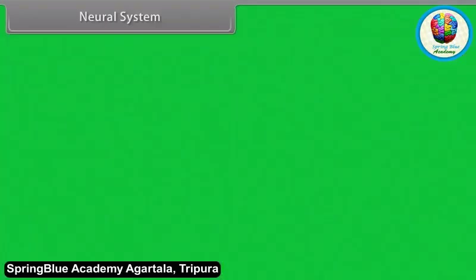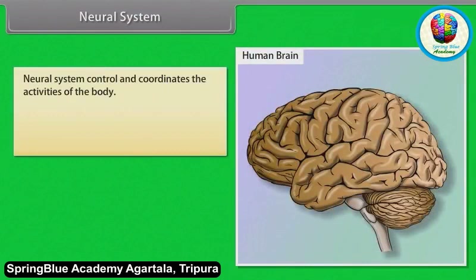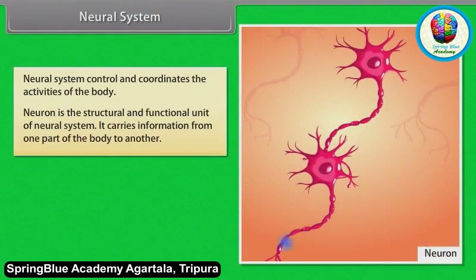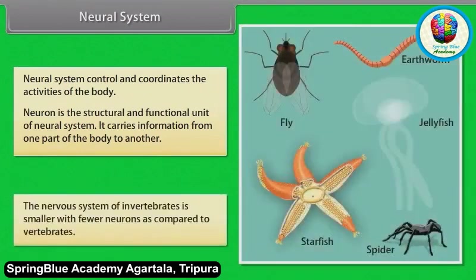The neural system controls and coordinates the activities of the body. The neuron is the structural and functional unit of the neural system. It carries information from one part of the body to another. The nervous system of invertebrates is smaller with fewer neurons as compared to vertebrates.